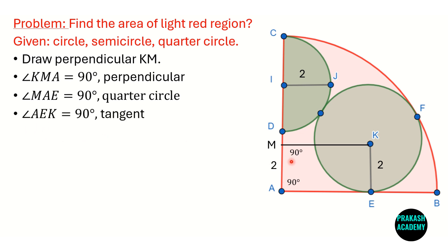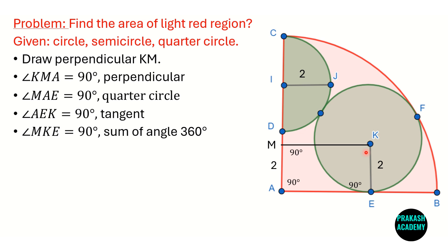Now, angle AEK is also 90 degrees because KE is the radius of the full circle and AB is tangent to it — radius and tangent always make a 90-degree angle. Since three of the four angles in quadrilateral MAEK are 90 degrees, and the sum of all angles is 360 degrees, the fourth angle MKE must also be 90 degrees. This means MAEK is a rectangle.